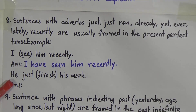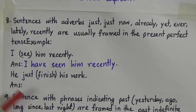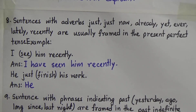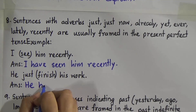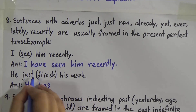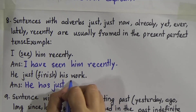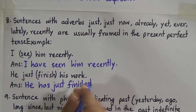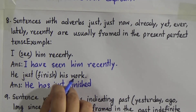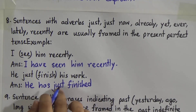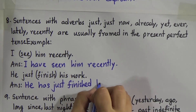Second example: 'He has just finished his work.' The word 'just' signals present perfect tense. Subject 'he' is third person singular, so we write 'has.' We place 'just' between 'has' and the past participle. The past participle of 'finish' is 'finished.' Answer: 'He has just finished his work.'